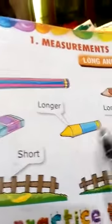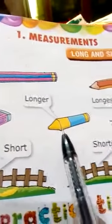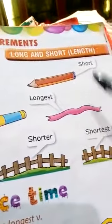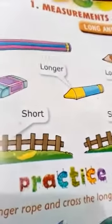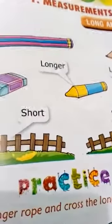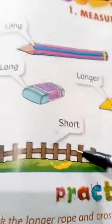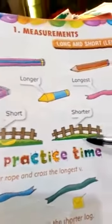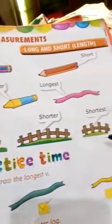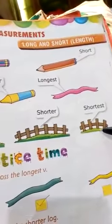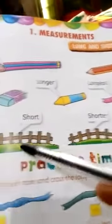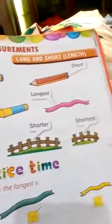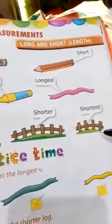This object is medium and this object is long. This object is short, shorter, and shortest. This object is short, medium size, and this object is short.